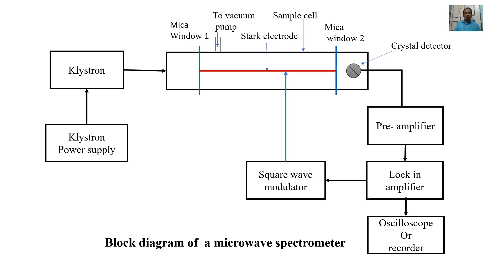The block diagram of the microwave spectrometer is shown in the figure. The source is the klystron tube, which generates microwaves in a narrow range — that is why it is called a monochromator. This microwave is allowed to pass through the waveguides, which are tubes made up of copper. Generally, the sample will be in a gaseous state, though liquid and solid states are also possible. It will be confined within mica windows on both sides.